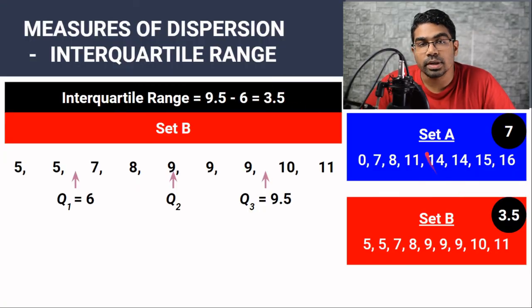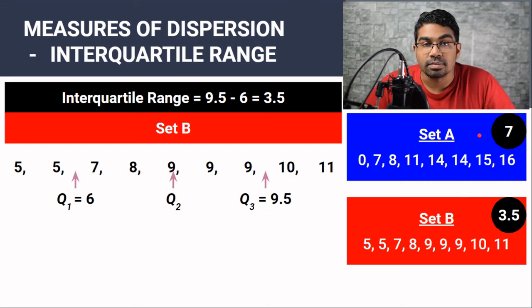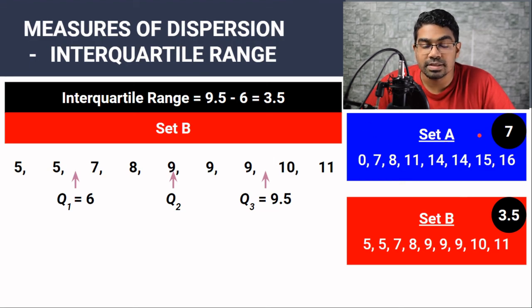Once again, the interquartile range shows us that the data in set A is more dispersed than the data in set B. That's it for this video guys. I hope you've learned something. If you have, please don't forget to hit that like button — it really does help tell YouTube that you've enjoyed the video. If you haven't subscribed yet, please do subscribe. I'll be producing at least one video a week. I'll see you in the next video.